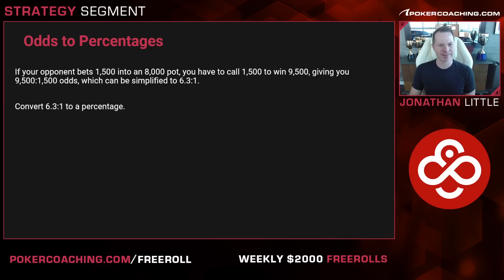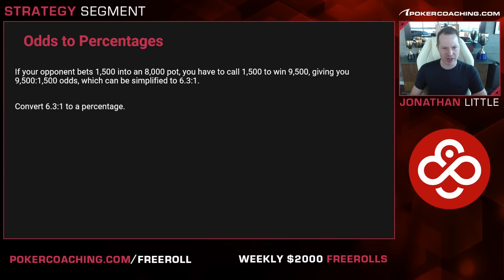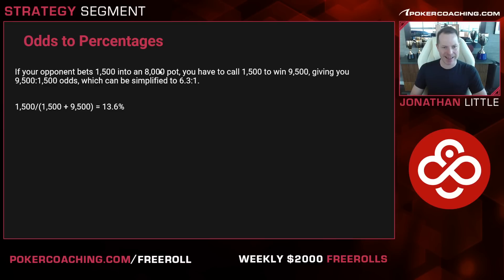Let's say your opponent bets 1,500 into an 8,000 pot. You have to call 1,500 to win 9,500, giving roughly 6.3 to 1 odds. Converting: 1,500 divided by (1,500 plus 9,500) equals 13.6%. Again, facing a tiny bet, you don't need to win very often. But if your opponent bet 8,000 into the 8,000 pot, you'd have to put in 8 to win a total of 24, so you need to win a third of the time — about 33%.